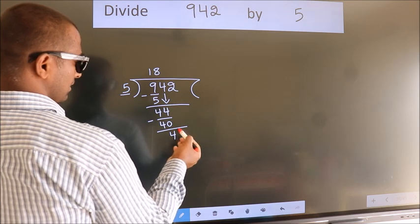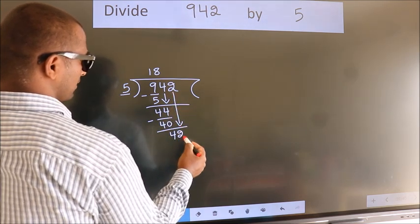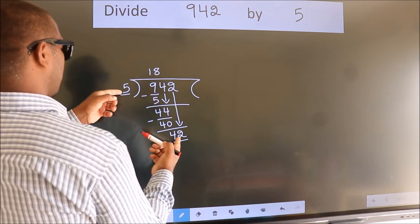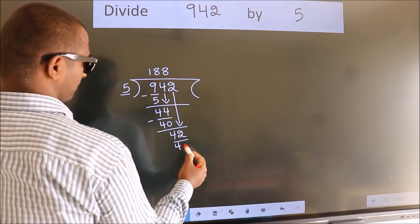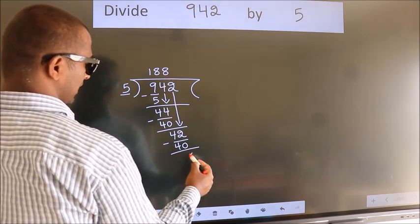After this, bring down the beside number. So, 2 down. So, 42. A number close to 42 in the 5 table is 5 eights 40. Now we subtract. We get 2.